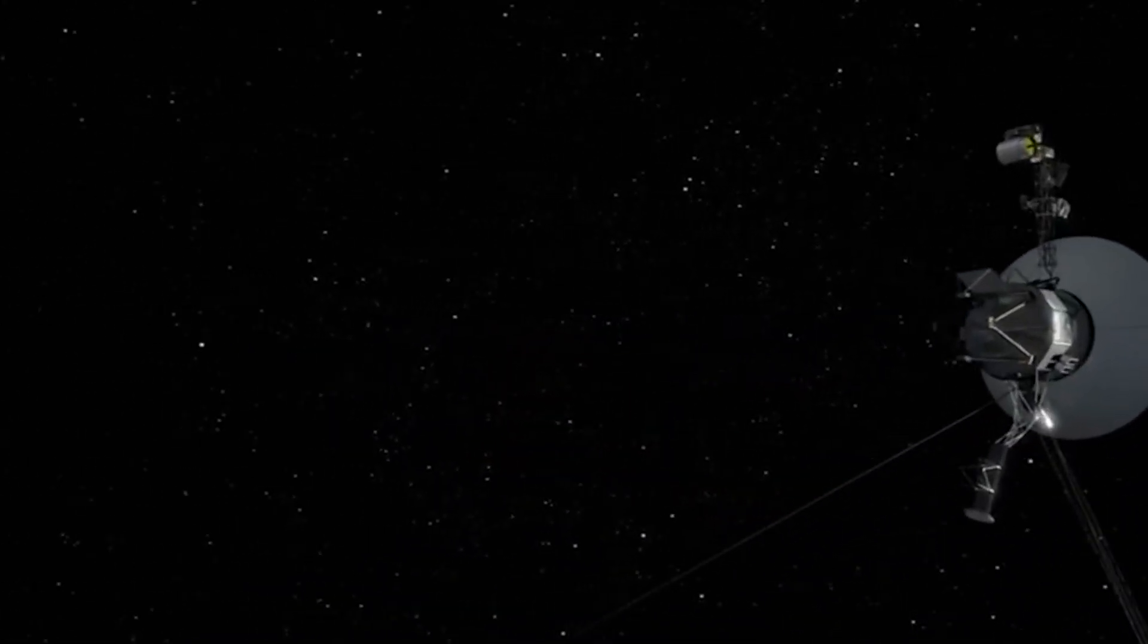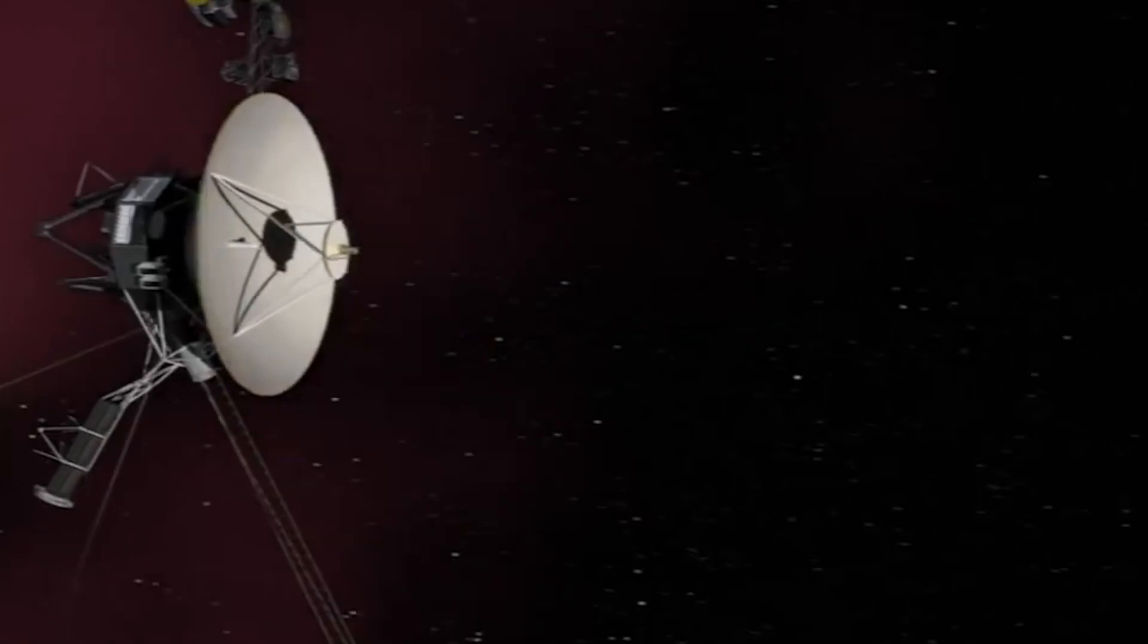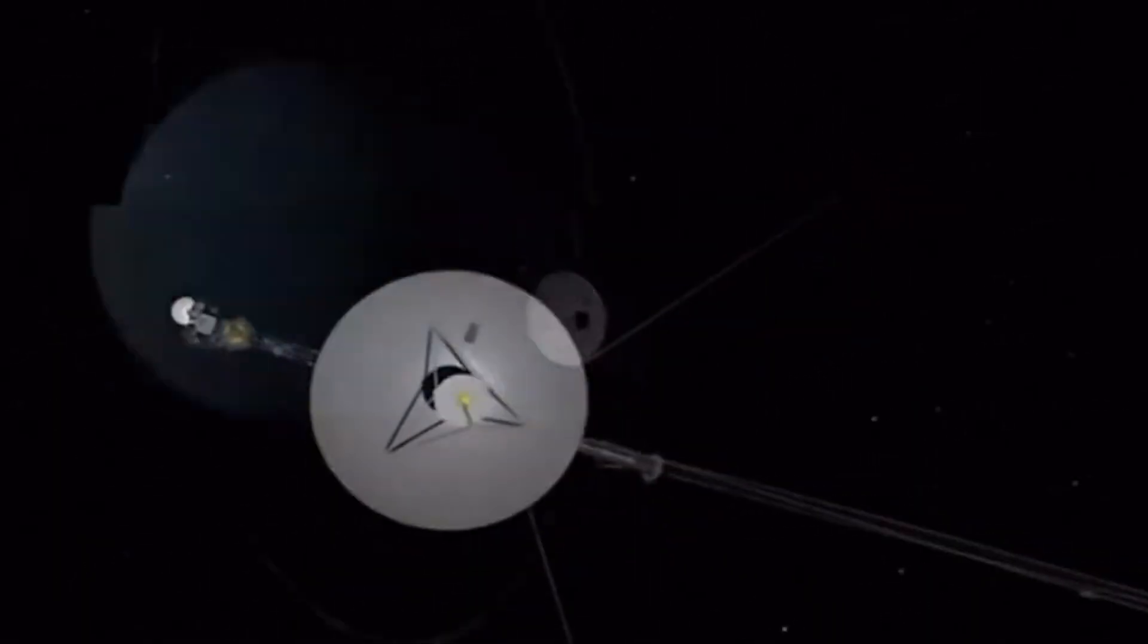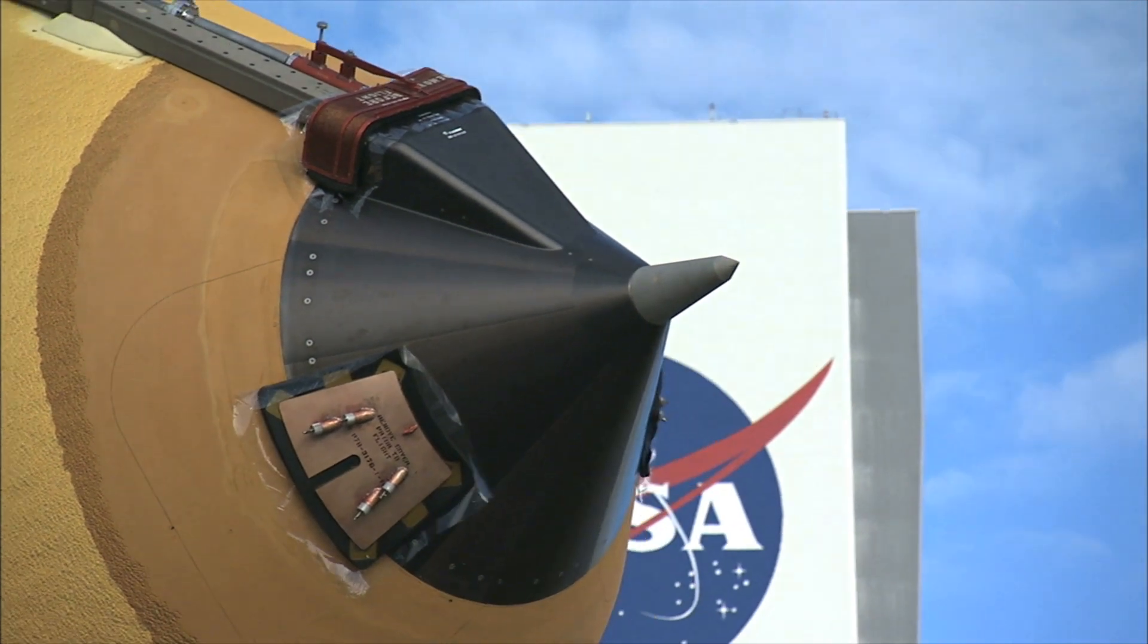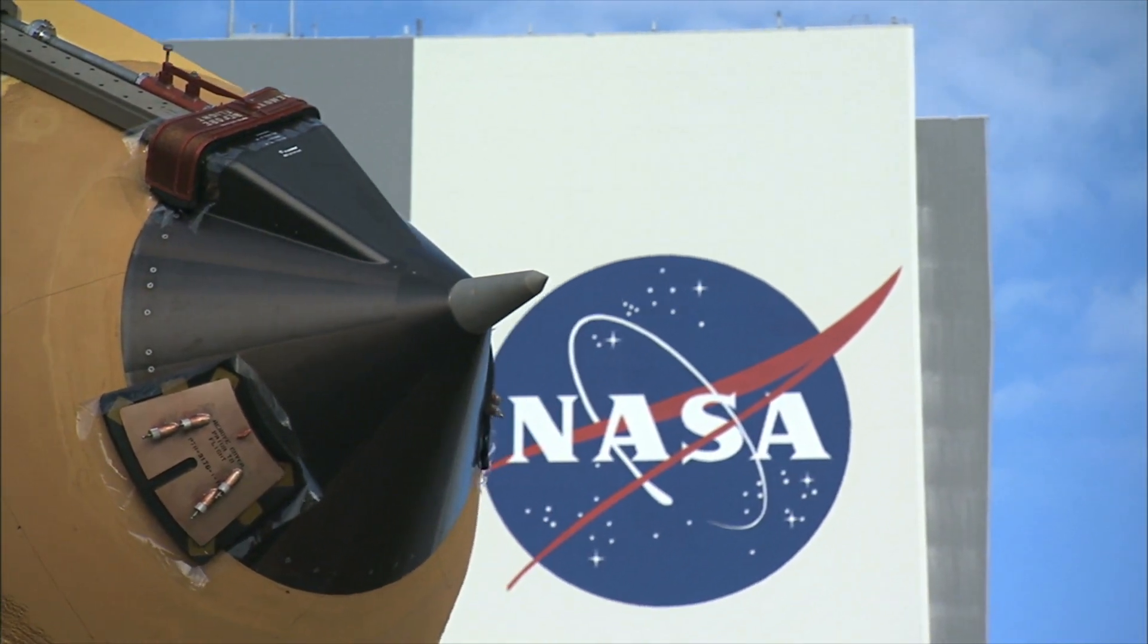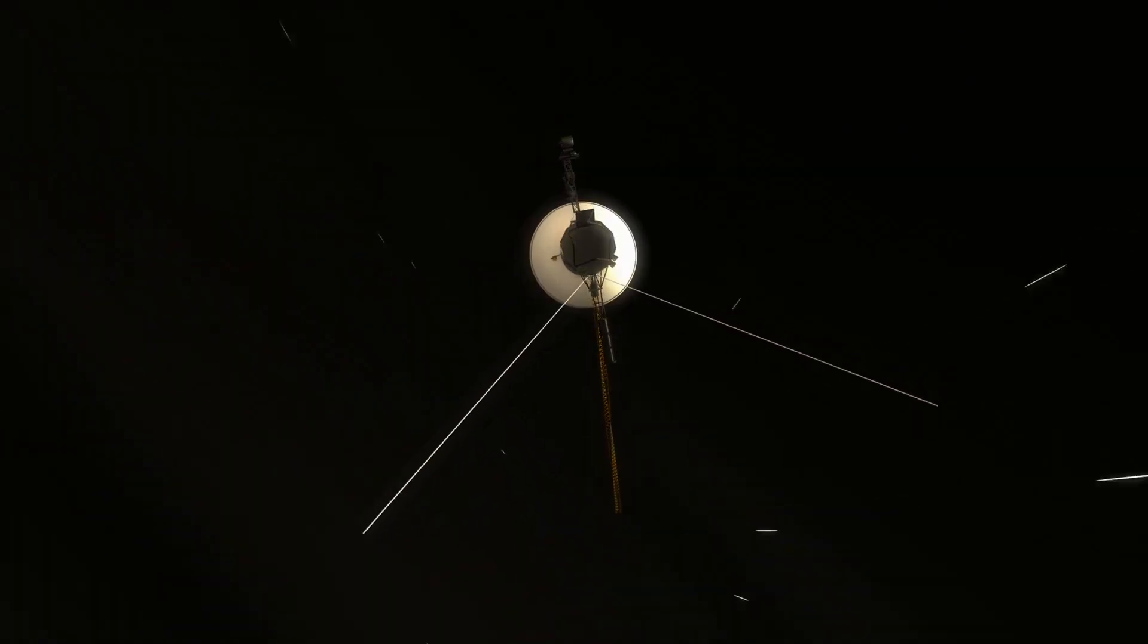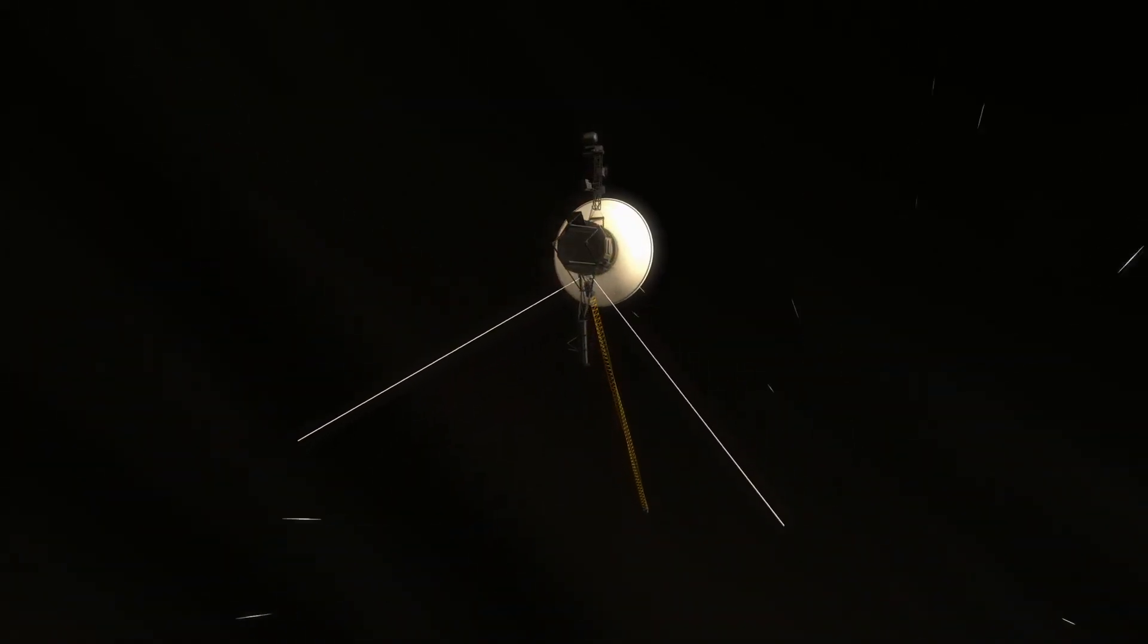In 1989, Voyager 2 reached Neptune for the first time and brought experts important new insight into this gigantic celestial object. At that time, NASA's unmanned space probe had already been on its historic mission through the endless expanses of our galaxy for over ten years.